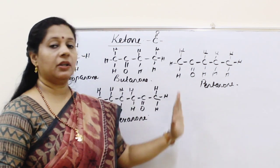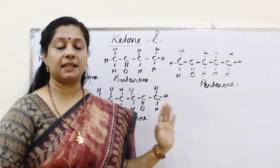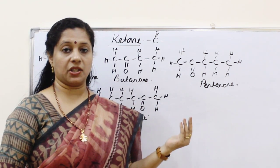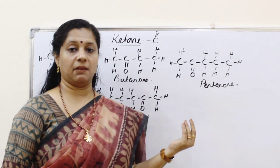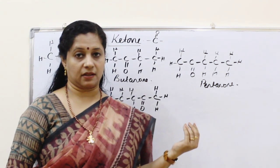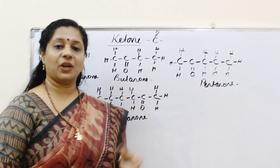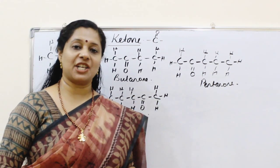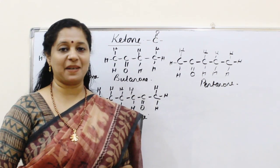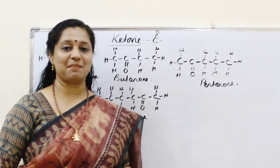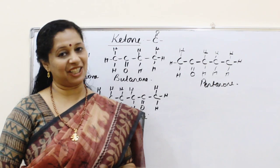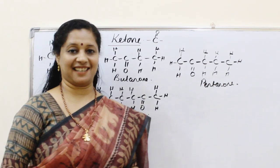So we have seen all the functional groups: starting from haloalkanes, then the alcohol group, aldehyde group, carboxylic acid group, and ketone group. You should write and practice all of these so that if any structure is asked, you can write it. If you understood what I taught, please like, share, and subscribe to my channel Biology My Passion. Thank you for watching.